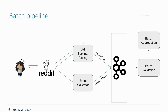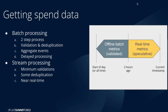The aggregation step takes the raw events — since budget is set at the campaign level — and computes the total spend on a campaign to show to ad serving, rather than individual raw events. For getting spend data to the ad pacing system, batch processing has an inherent delay — in our case, two hours. So we accompanied the batch solution with a stream processing solution.